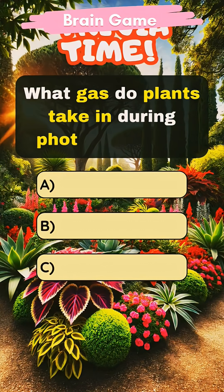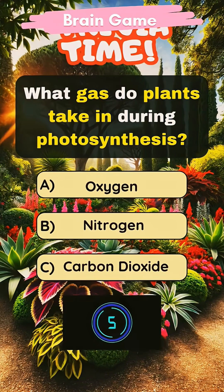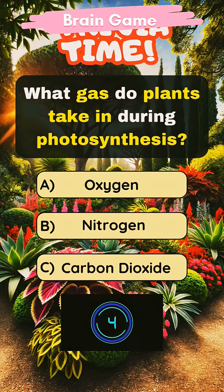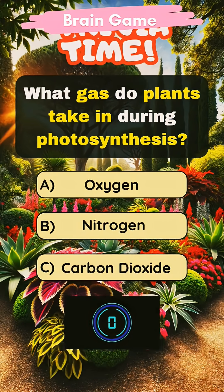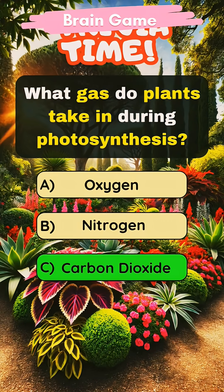What gas do plants take in during photosynthesis? Answer C: Carbon dioxide.